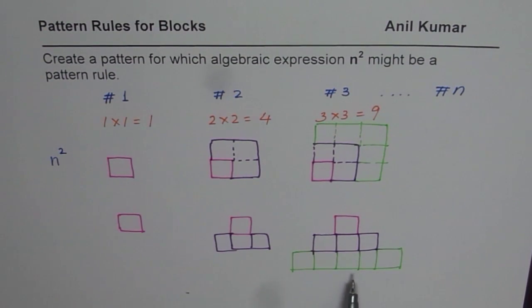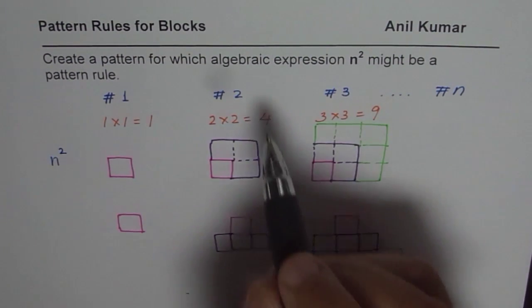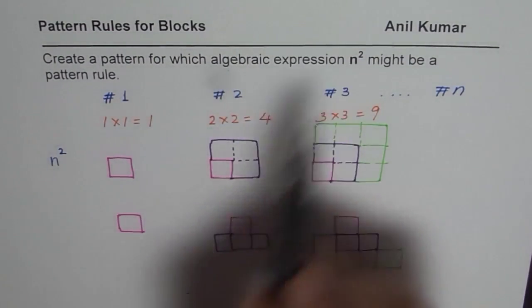So what you see here is that the number of blocks are 1, 4, 9, 16, 25 and so on. And this sequence of blocks could be represented by an algebraic expression n².